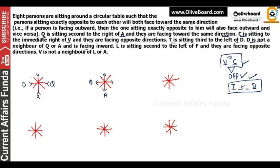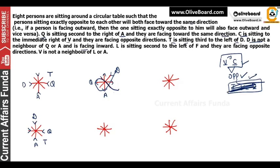Now we can fix this — D is not Q and A's neighbor, and D is facing inward. If D is here, then 1, 2, 3 — T is here. If D is here on the other side, then 1, 2, 3 — T comes here too. So there are two possibilities. We will make two possibilities. Next: L is sitting second to the left of F, and they are facing opposite directions. L and A will not be adjacent to F.